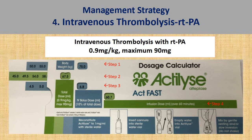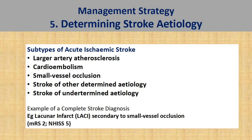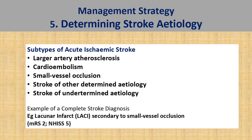It may seem that alteplase is easy to give, but what is tedious is the close monitoring required afterwards to watch for potential complications. It is also crucial to know the stroke etiology, as you need to take necessary steps to prevent stroke recurrence. Broadly, you can divide etiology into five categories: large artery atherosclerosis, cardioembolism, small vessel occlusion, stroke of other determined etiology, and stroke of undetermined etiology. A complete stroke diagnosis would be, for example: lacunar infarct (LACI) due to small vessel occlusion, with an mRS score for pre-morbid status and NIHSS score for current neurological deficit.